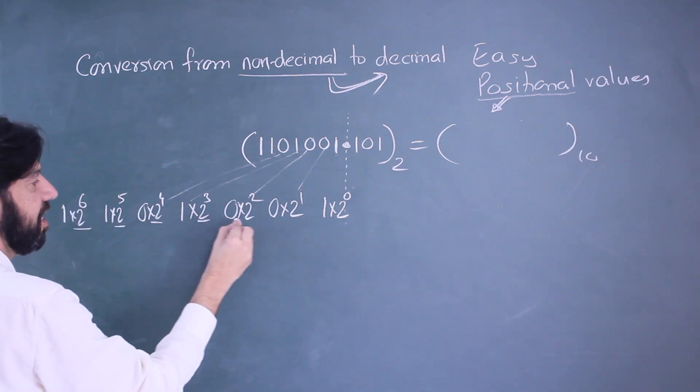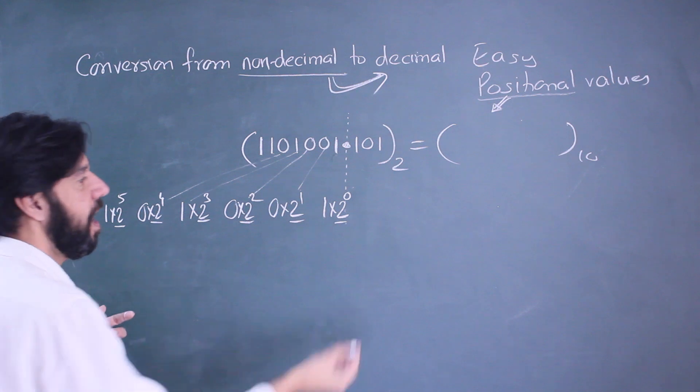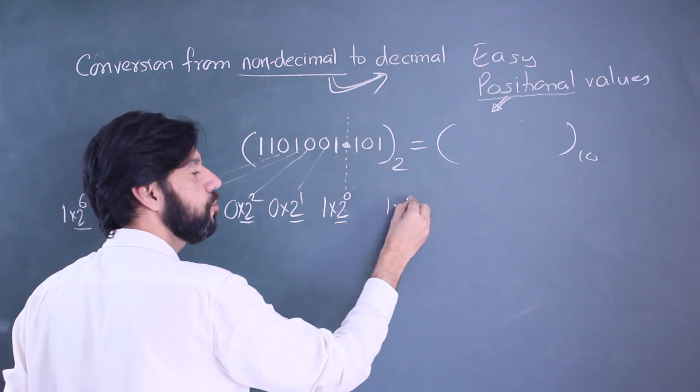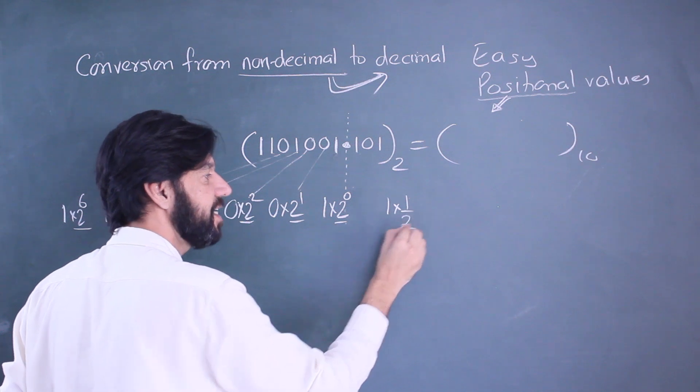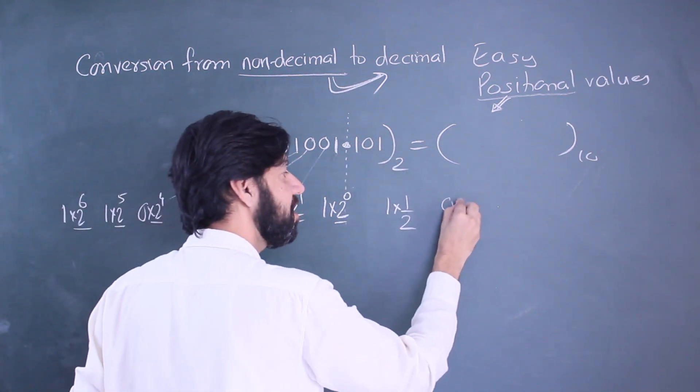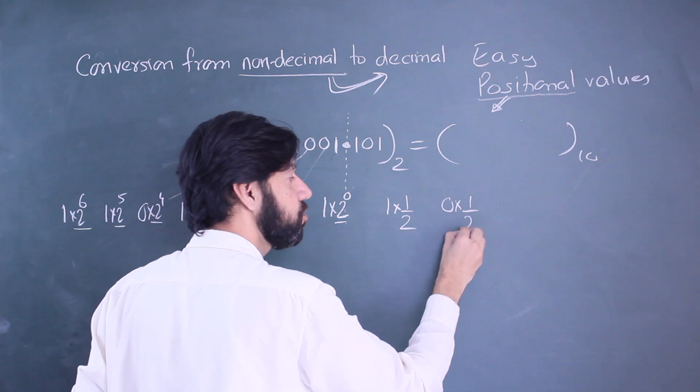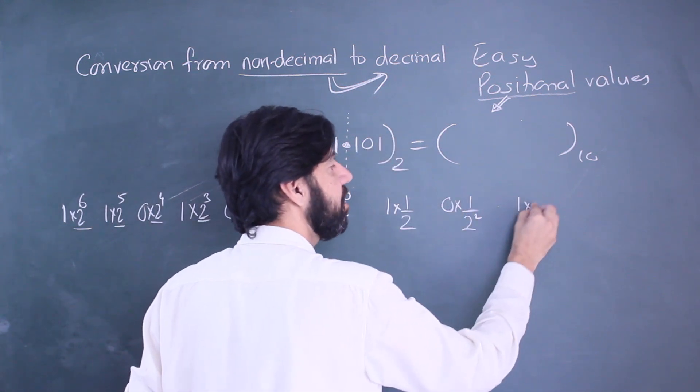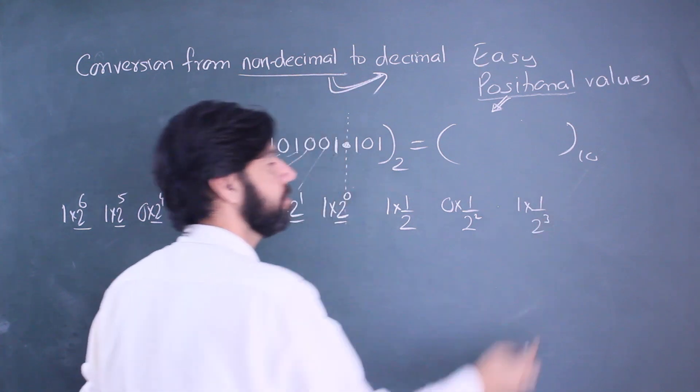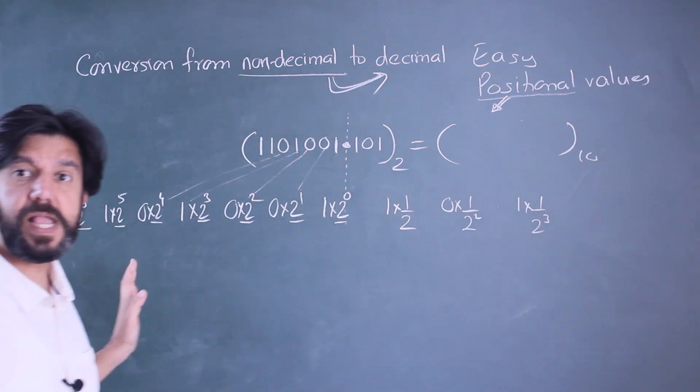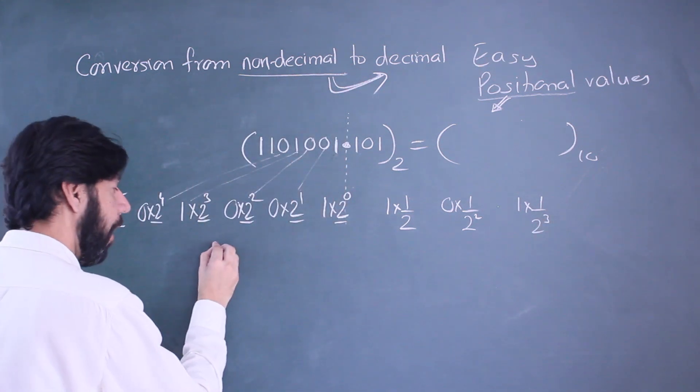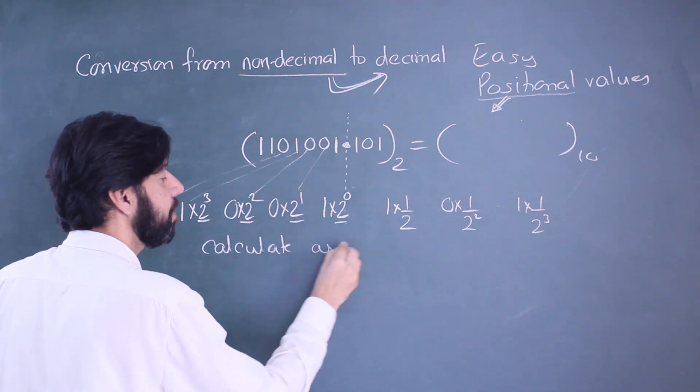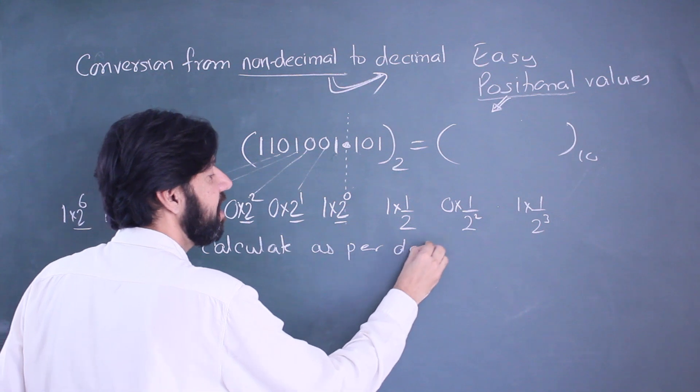These are your positional values. Continuing, this one will be one into two raised to minus one. I'm writing it as one by two. There's a zero: zero into one by two square, that's a four. And there's a one again, so one into two cube.